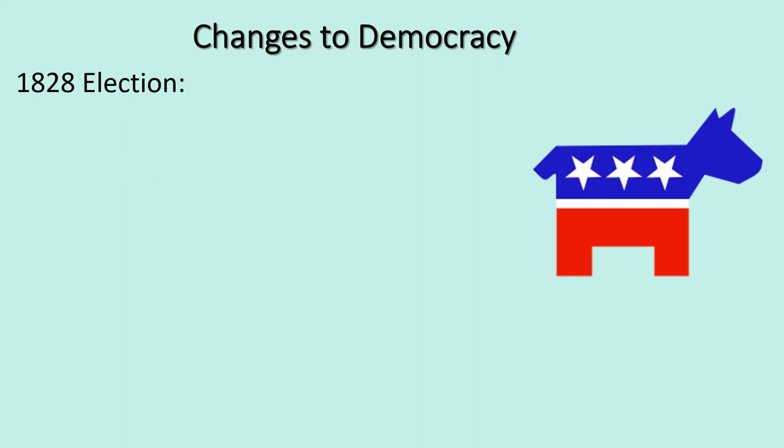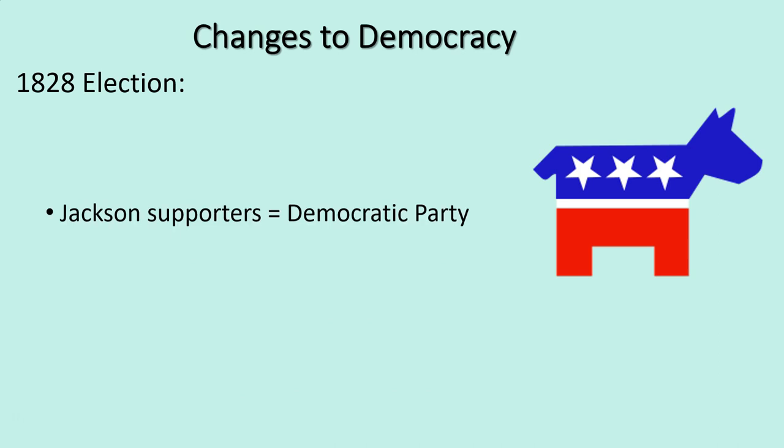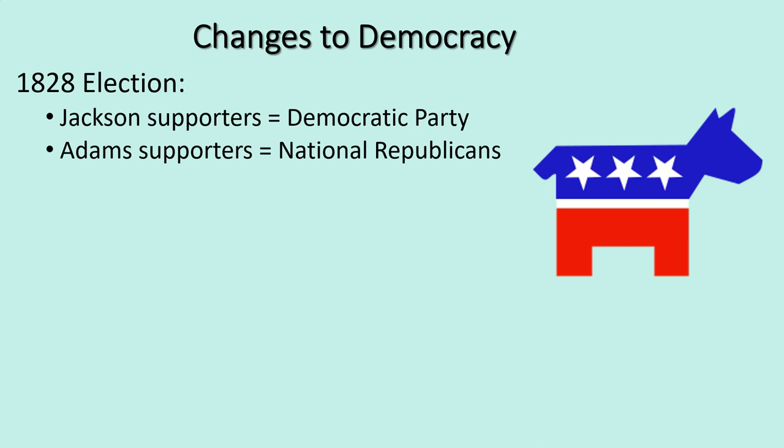John Quincy Adams is going to have a miserable presidency. He tried to govern like his father, and he was also constantly harassed by Jackson and his supporters, who spread scandals and rumors. It was a very ugly, miserable presidency. By the election of 1828, Jackson and his supporters are now the Democratic Party, while Adams' supporters are known as the National Republicans.